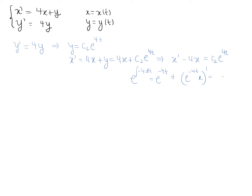When we multiply e to the minus 4t by c2 e to the 4t, we get the constant c2, because e to the minus 4t times e to the 4t equals e to the zero, which is 1. So the derivative of e to the minus 4t times x is a constant c2. That implies e to the minus 4t times x is a linear function in t.